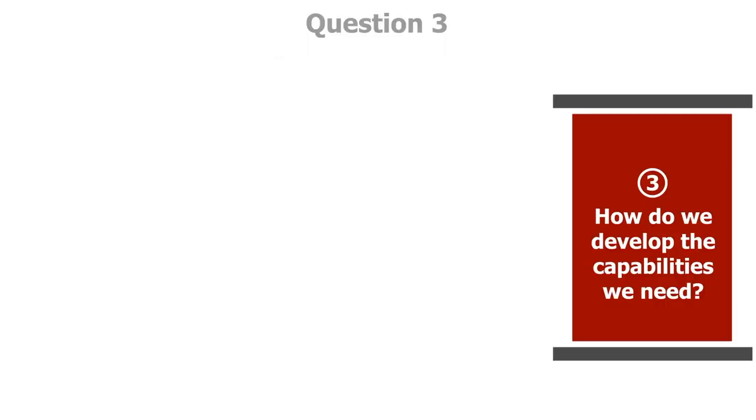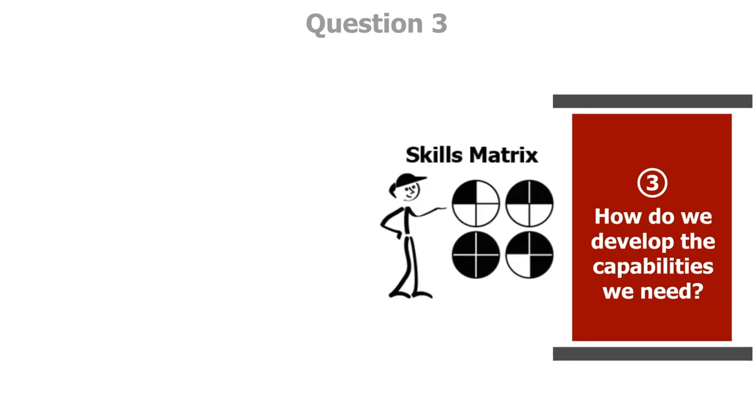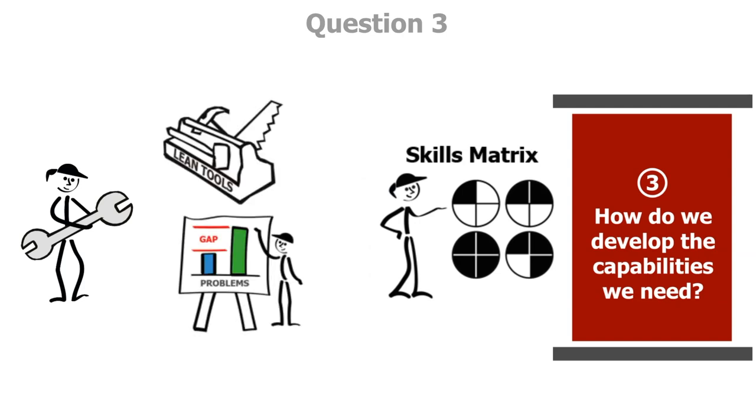Question three asks how do we develop the capabilities we need? Having defined the work to be done, we now ask what capabilities we need to do and improve the work to provide value. Capability development is needed on at least two dimensions: capability to do the work and capability to improve the work.